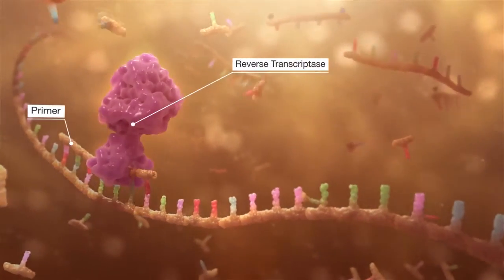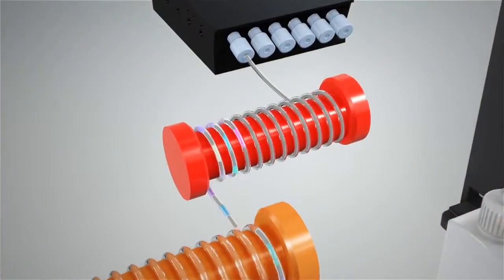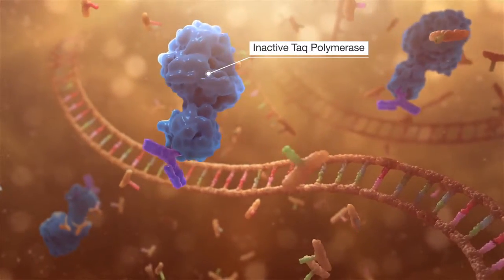The train is then delivered through a 55 degree Celsius zone for reverse transcription and then through a 94 degree Celsius zone for activation of TAC polymerase.